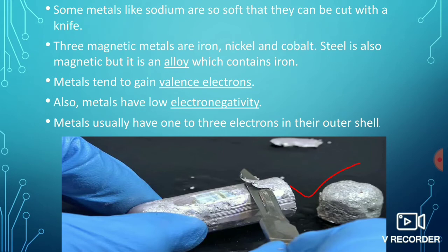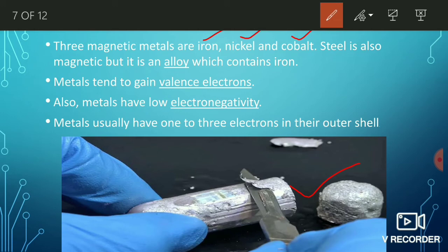The three magnetic metals are iron, nickel, and cobalt. Steel is also magnetic, but it is an alloy. Steel is made up of iron and carbon, and sometimes other elements such as chromium.